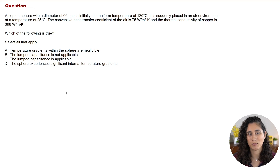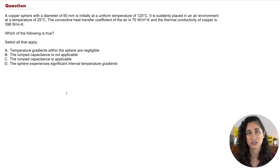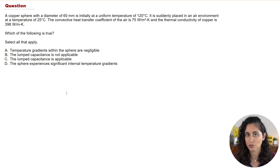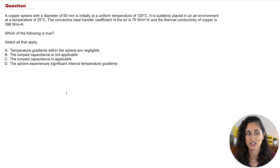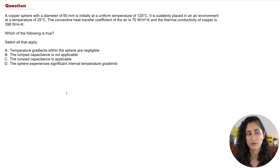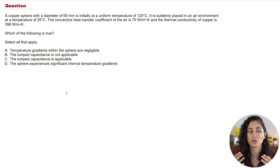A copper sphere with a diameter of 60 millimeters is initially at a uniform temperature of 120 degrees Celsius. It is suddenly placed in an air environment at a temperature of 25 degrees Celsius. We are given the convective heat transfer coefficient of the air and the thermal conductivity of the copper.